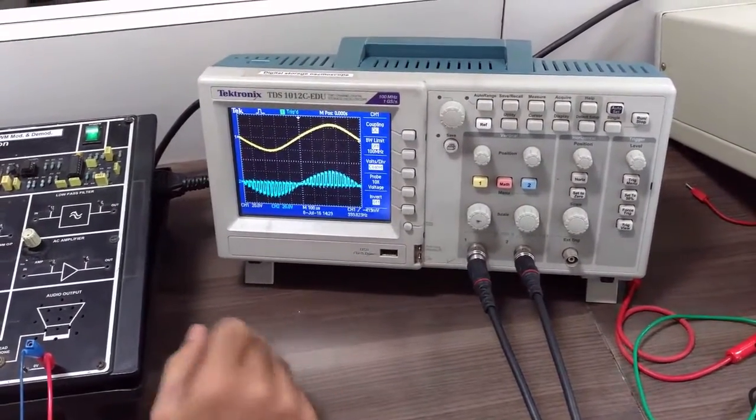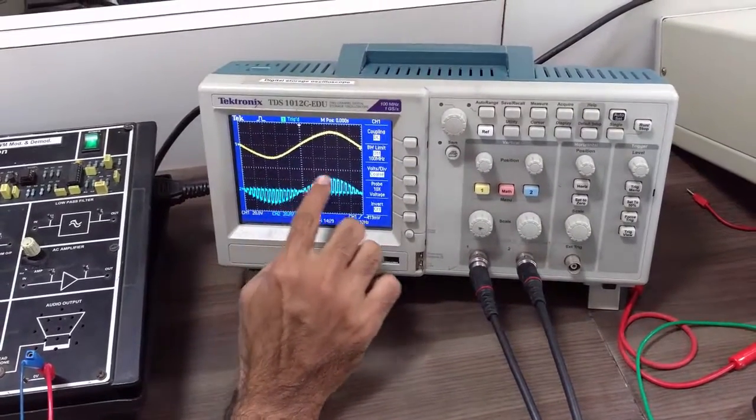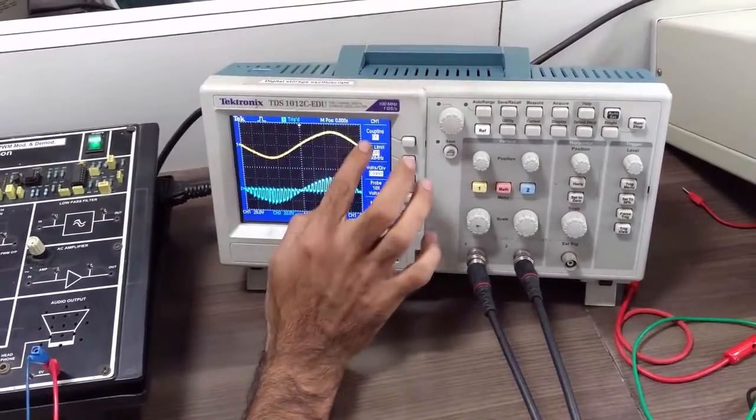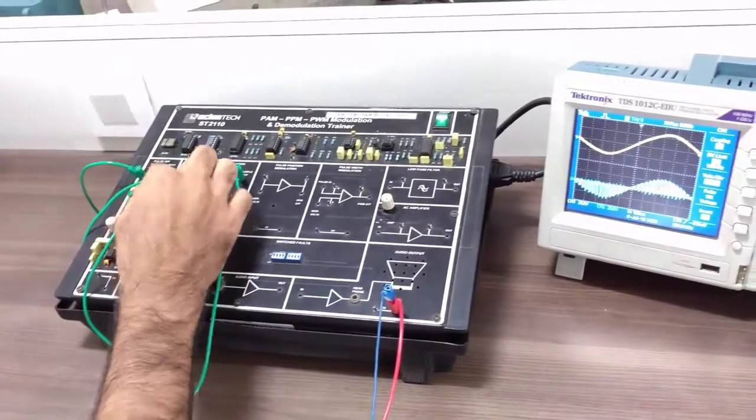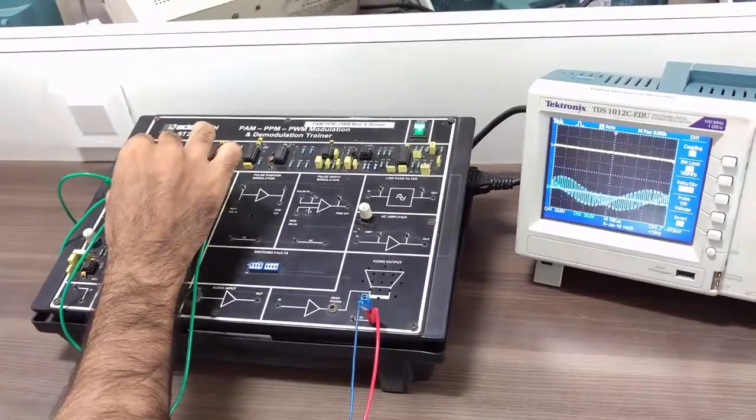As you can see on the output, this is the sampled version of the input sine wave. This is the input sine wave which you have given. To check the input pulse signal, you just need to remove this knob from here and see the pulse input.